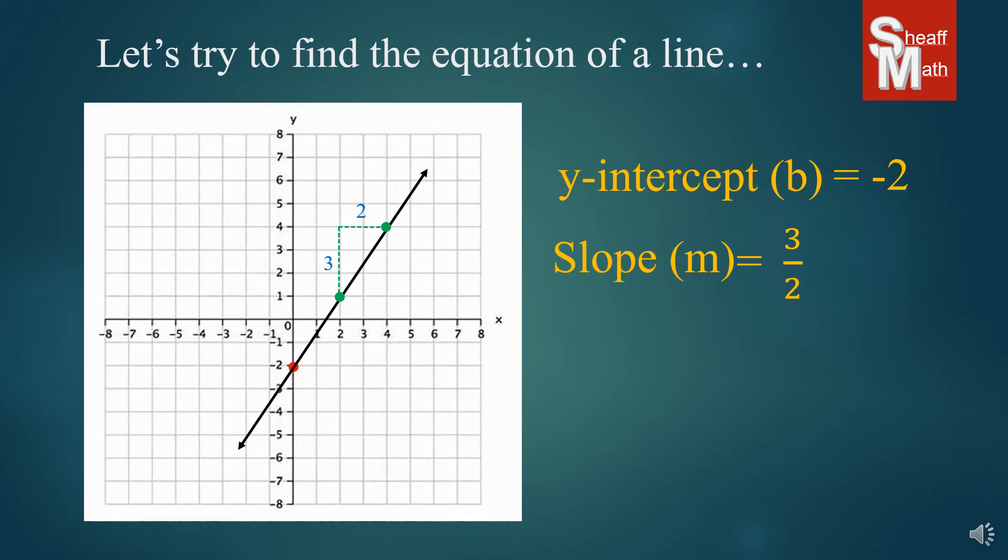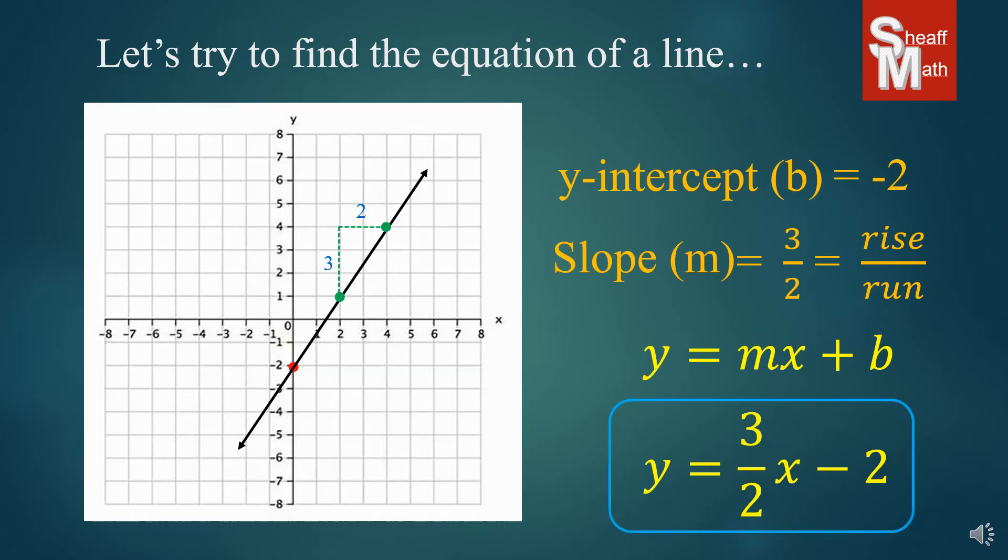Now that we have our two key pieces of information, we are going to put them into the generic form. So our m is going to be 3 over 2, and our b is going to be negative 2. And so we write the equation like that.